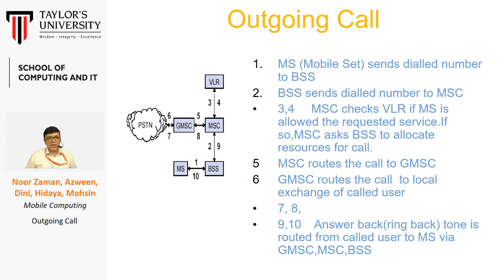The gateway is only required when we are trying to change the network. In this case, because we are calling to the PSTN, the gateway is required. The gateway forwards this request to the PSTN, and the same process will happen on the PSTN side. Once we get the green signal back from the PSTN, the same path will be followed back and it will reach the MSC. Now is the moment when your phone will start ringing.